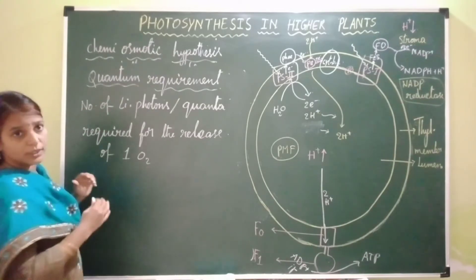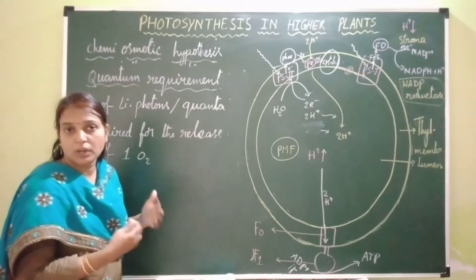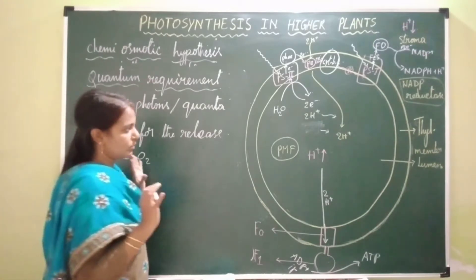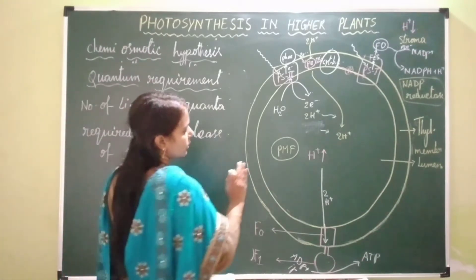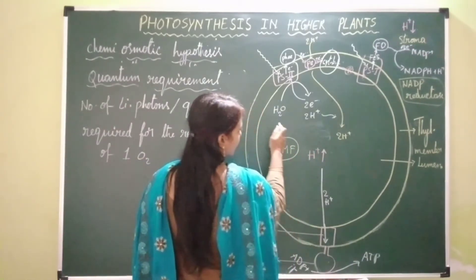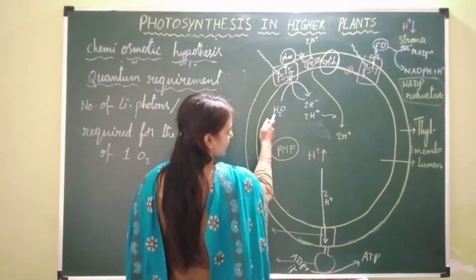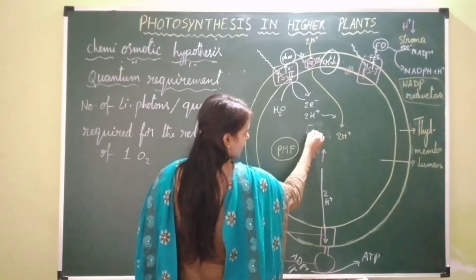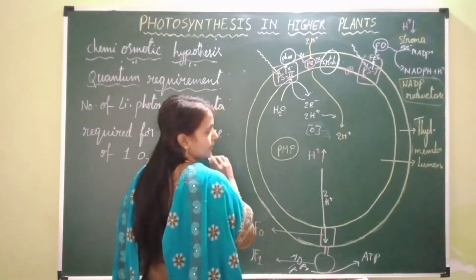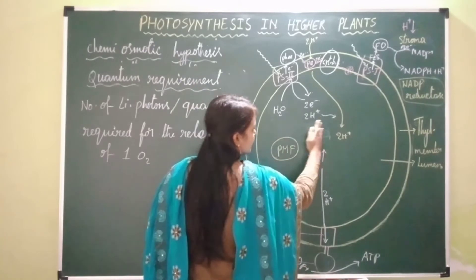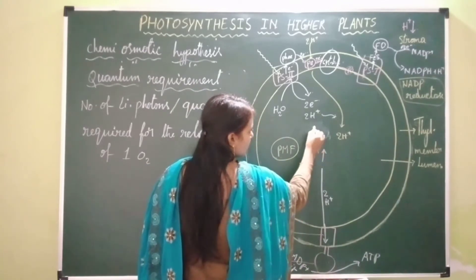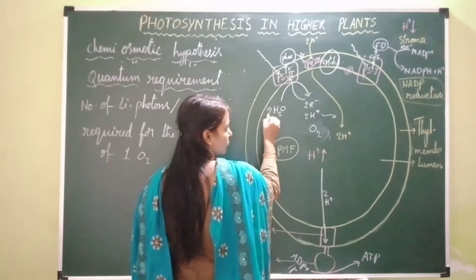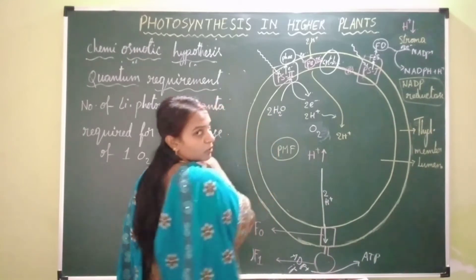Now let us see what is the number of photons or light quanta required for the release of one oxygen molecule. Previously what we studied: for the splitting of one water molecule, one nascent oxygen is released. Whereas one molecule of oxygen will be released due to the splitting of two water molecules.